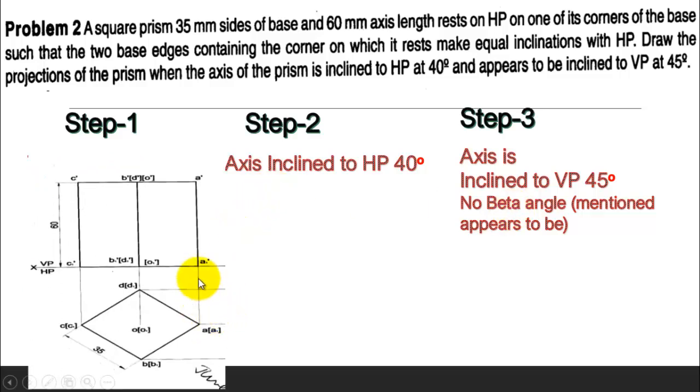Coming to solution, first step we have to take corner condition, we have to place the front view, and then they said the axis inclination we made 40 degrees. We need not to find beta angle, so 45 degrees will take and axis is placed on that, and final view we got it like this.